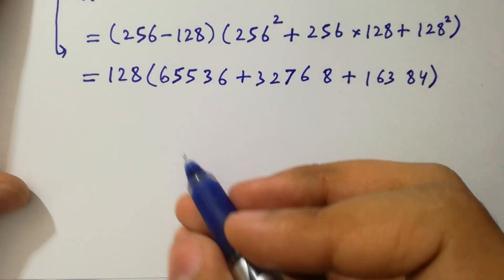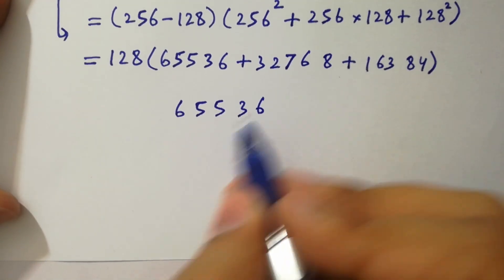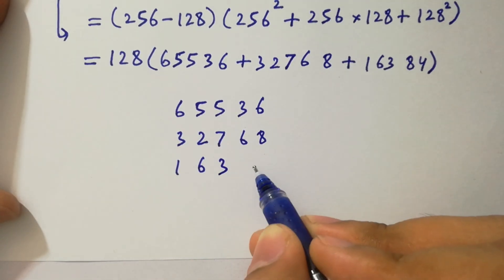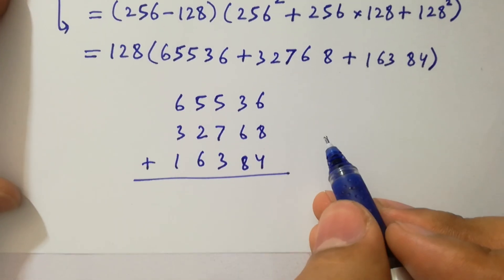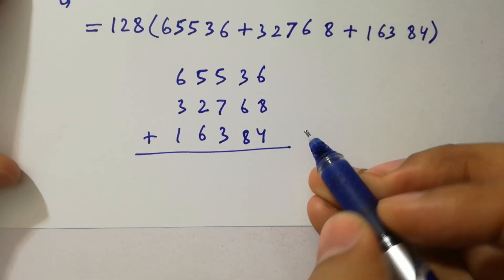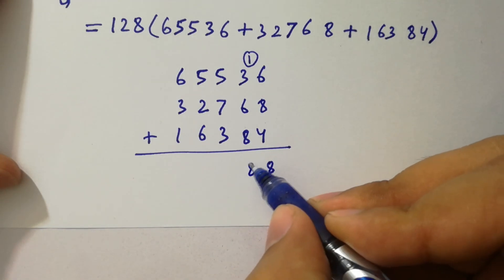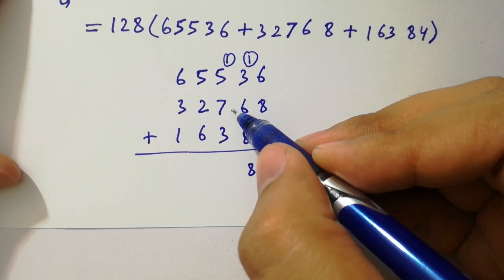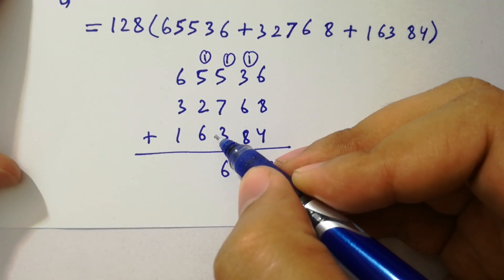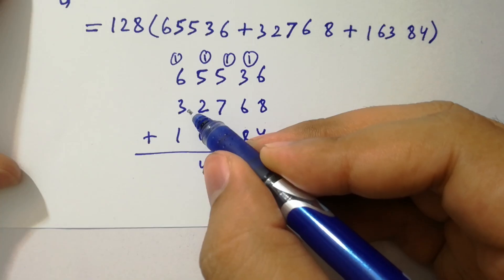Adding the values: 65,536 plus 32,768 plus 16,384. Adding them: 6 plus 8 is 14, 14 plus 4 is 18, write 8 carry 1. 3 plus 1 is 4, 4 plus 6 is 10, 10 plus 8 is 18, write 8 carry 1. Continuing the addition with carries gives us the sum inside the parentheses.